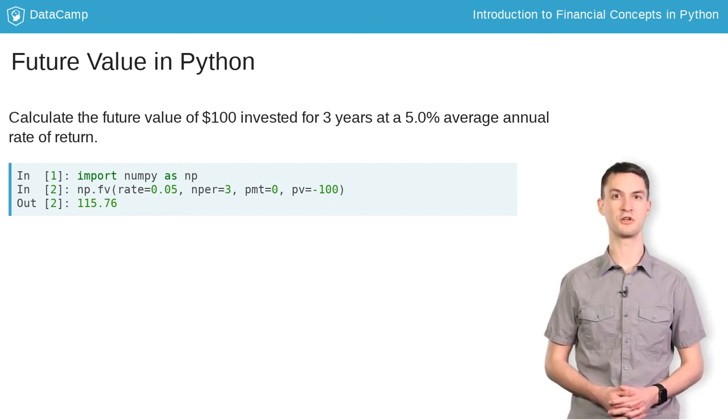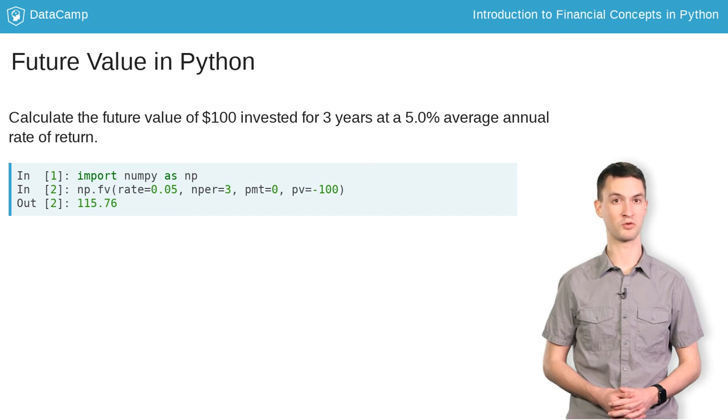As you would expect, the value returned is actually positive, the reverse of the present value function, and once again we ignore the PMT parameter.